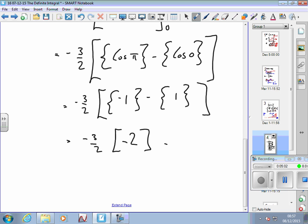And minus 3 over 2 times minus 2. The 2 is effectively cancelled. Minus times a minus is a plus. So this equals 3.